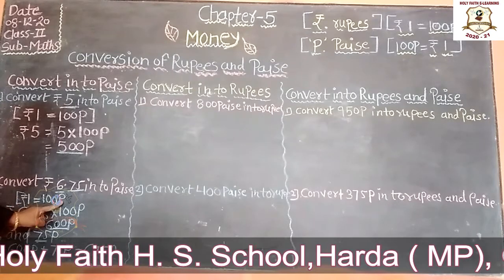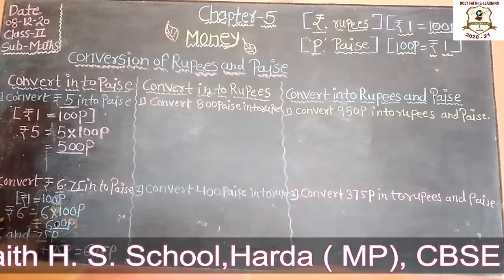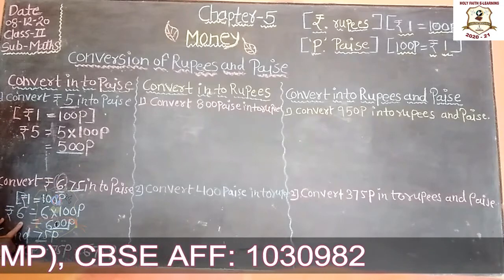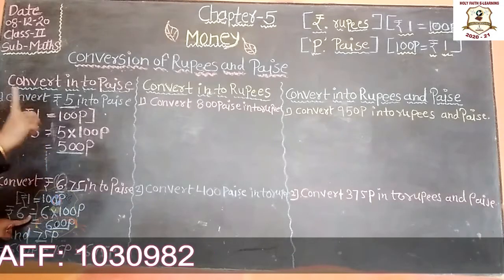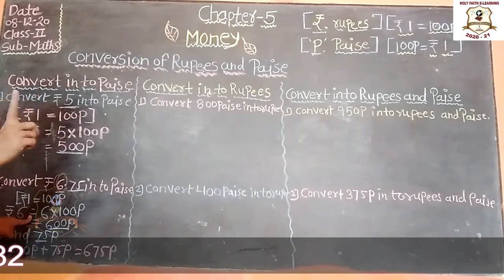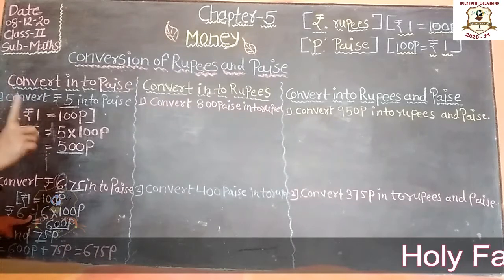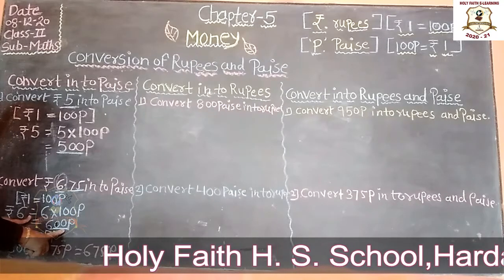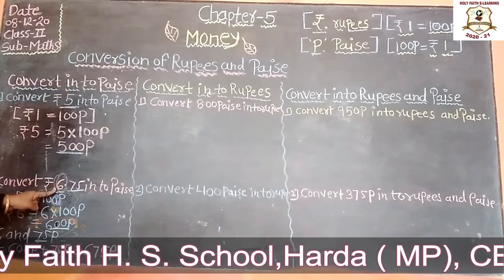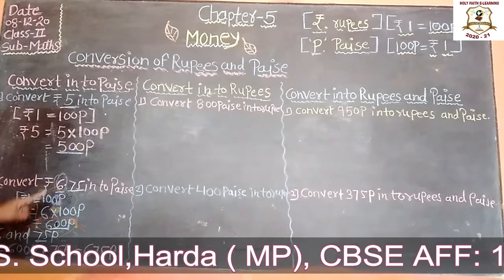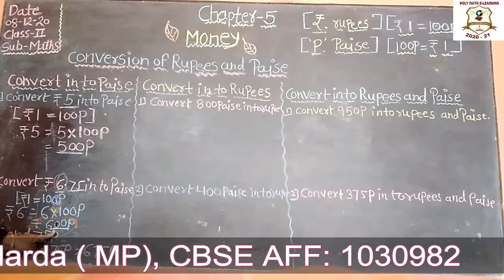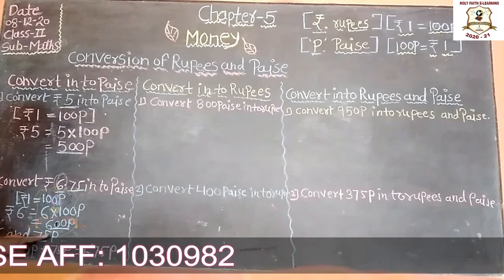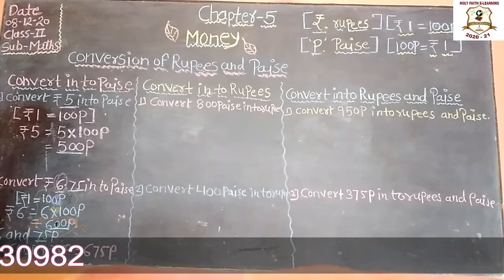Rupees 1 is equal to 100 paise. Rupees 6 is equal to 6 into 100 paise, which equals 600 paise. And rupees 6 and 75 paise — so 600 paise plus 75 paise equals 675 paise. Clear students?